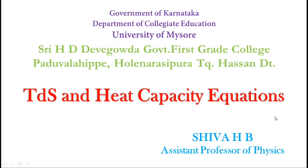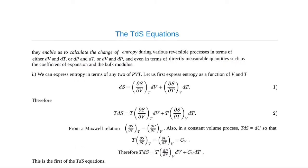Dear students, in this lecture we will derive TDS equations and heat capacity equations. We will derive the TDS equation where T is temperature, S is entropy, and DS means change in entropy. These two equations will enable us to calculate the change of entropy during various reversible processes in terms of dV and dT, or dP and dT, or dV and dP, and even in terms of directly measurable quantities such as coefficient of expansion and bulk modulus.